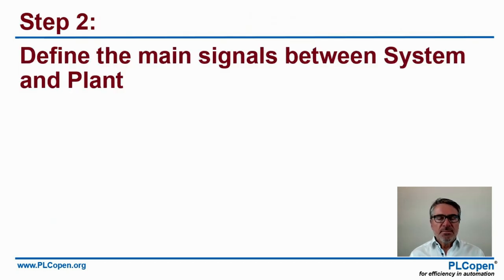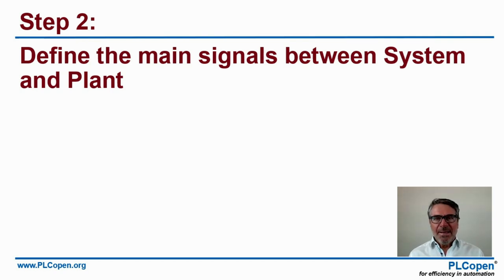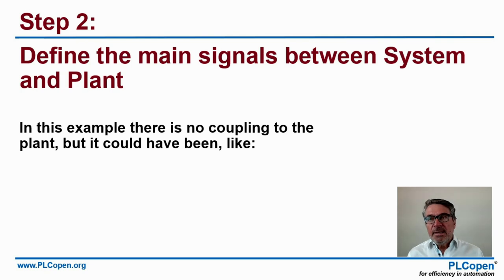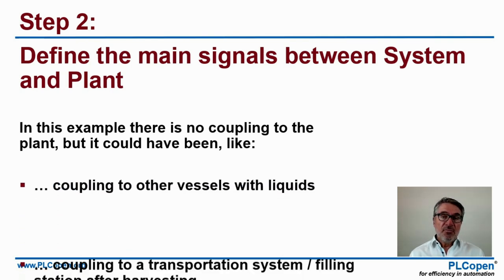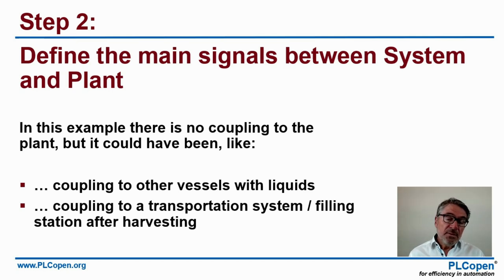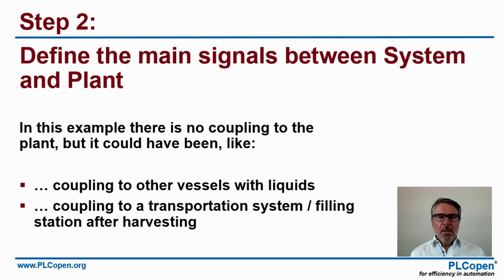Step two: define the main signals between the system and the plant. Assuming this system is part of a larger operation called the plant, there is not much coupling here. But it could be other vessels where the liquid comes from, a system to control pH, or a transportation and filling station after we harvest — where we get beer bottles filled.